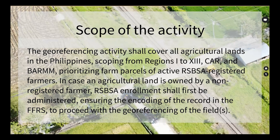Scope of the activity: the geo-referencing activity shall cover all agricultural lands in the Philippines, scoping from Regions I to 13, CAR, and BARMM, prioritizing farm parcels of active RSBSA registered farmers. In case an agricultural land is owned by a non-registered individual, RSBSA enrollment shall first be administered, ensuring encoding of the record in the FFRS before proceeding with geo-referencing.